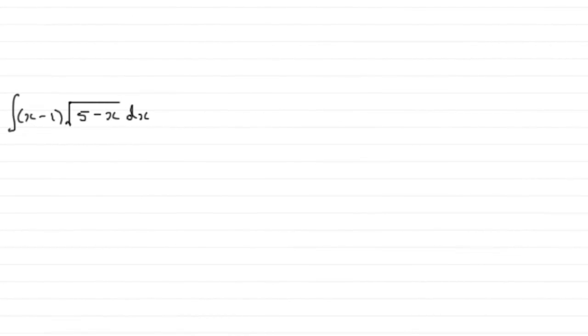Now for this part of the question, we're asked to integrate x minus 1 multiplied by the root of 5 minus x with respect to x. And we've got to do it by integration by parts.